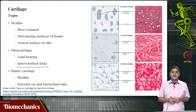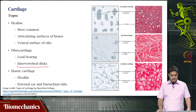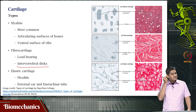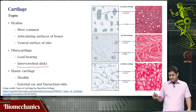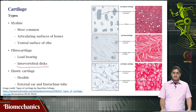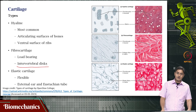Then you have elastic cartilage, which is the flexible type of cartilage. These are present on the external ear and the eustachian tube. Intervertebral discs are composed of fibrous cartilage, and their important function was covered while discussing the biomechanics of the spine.